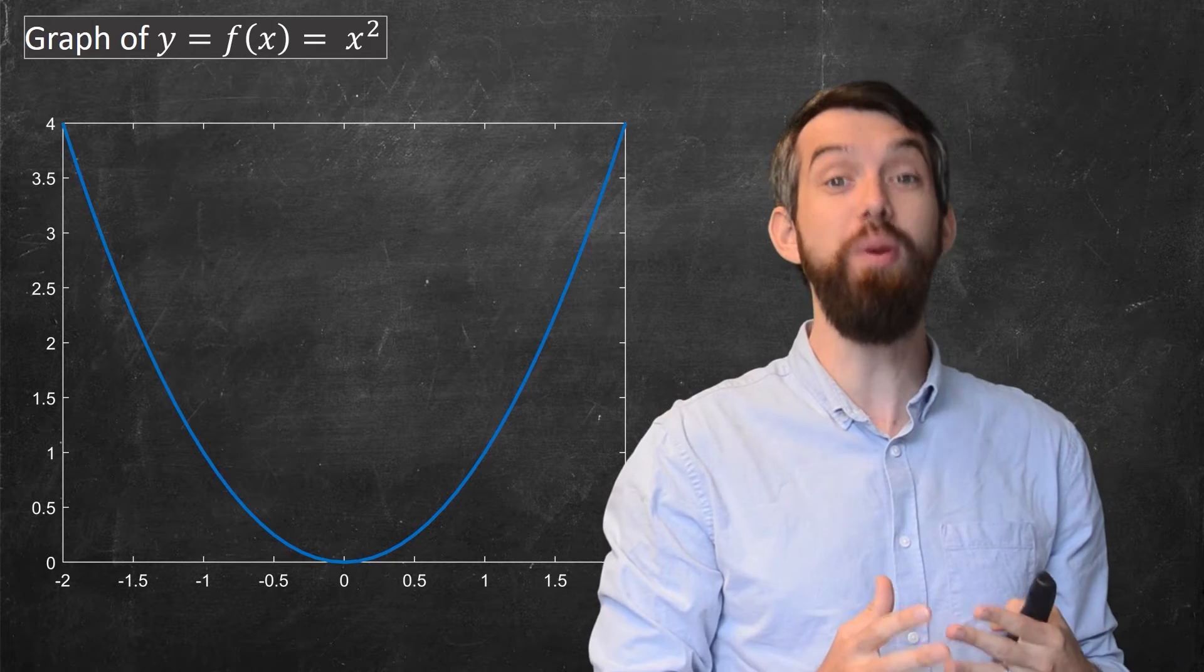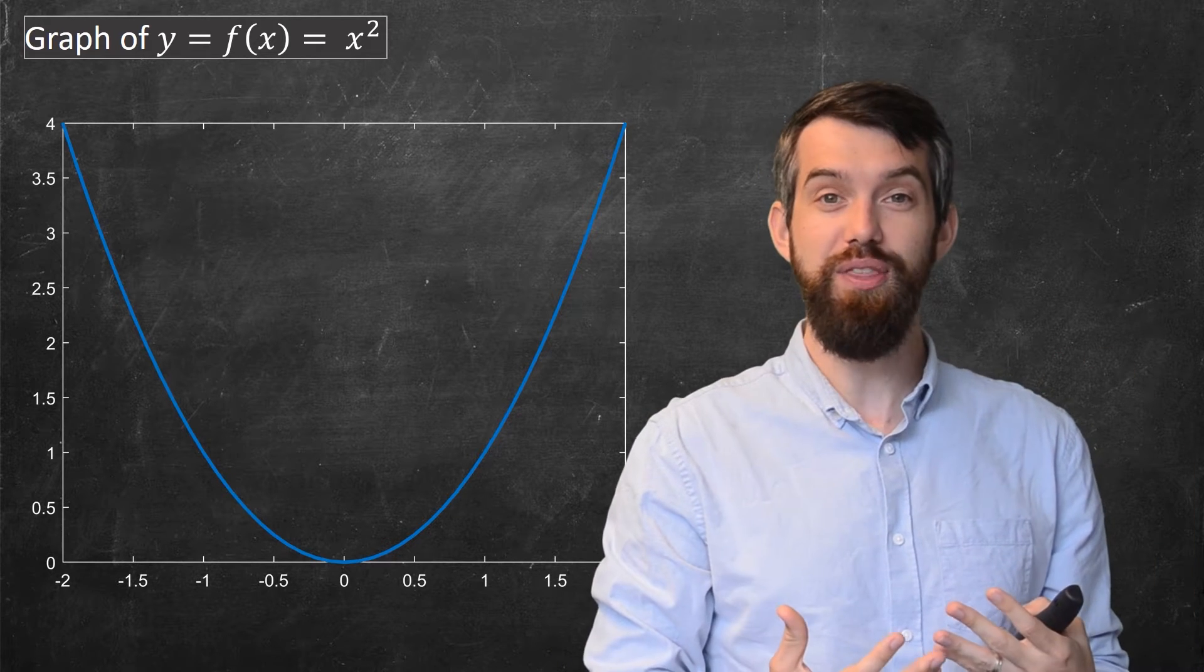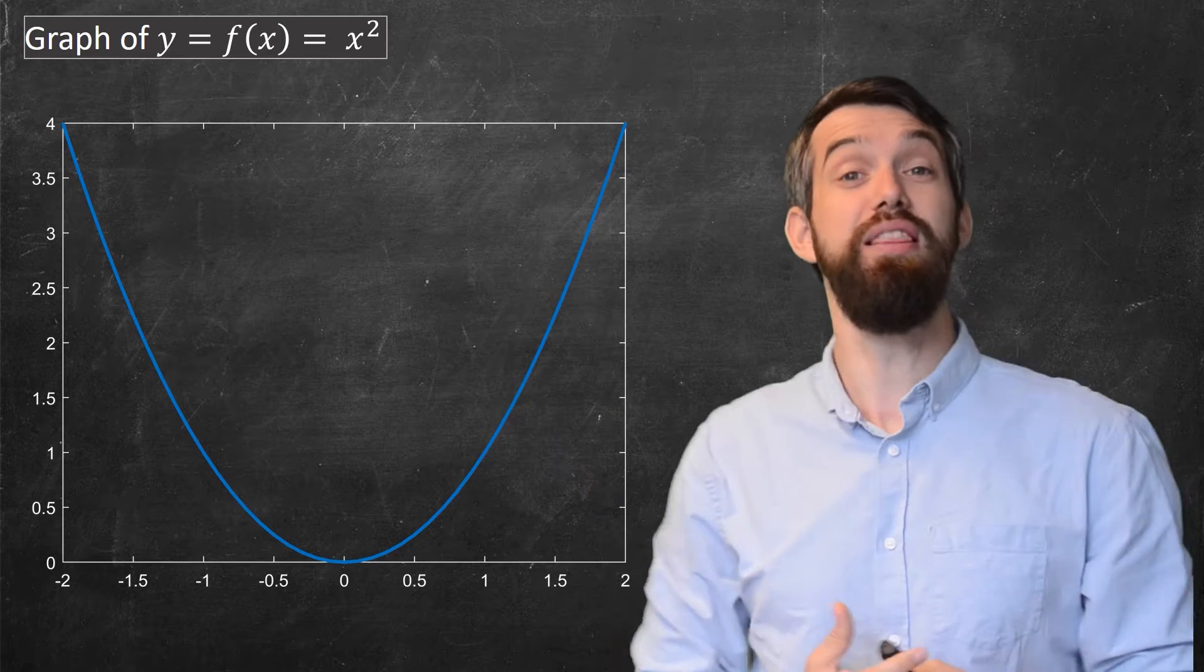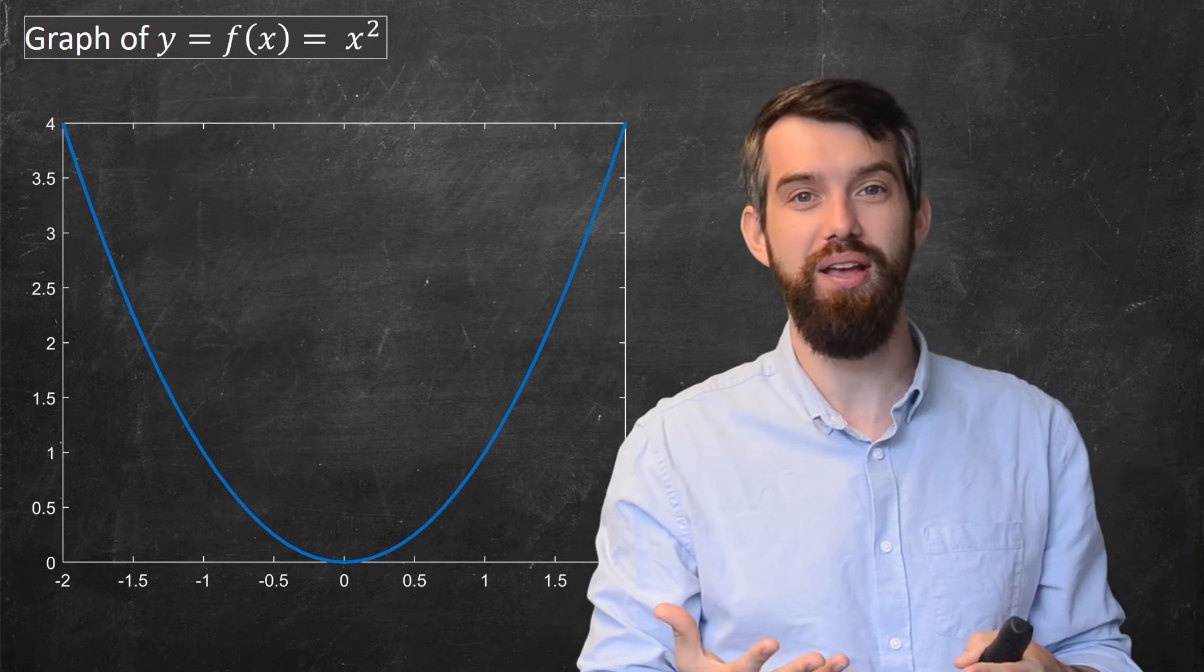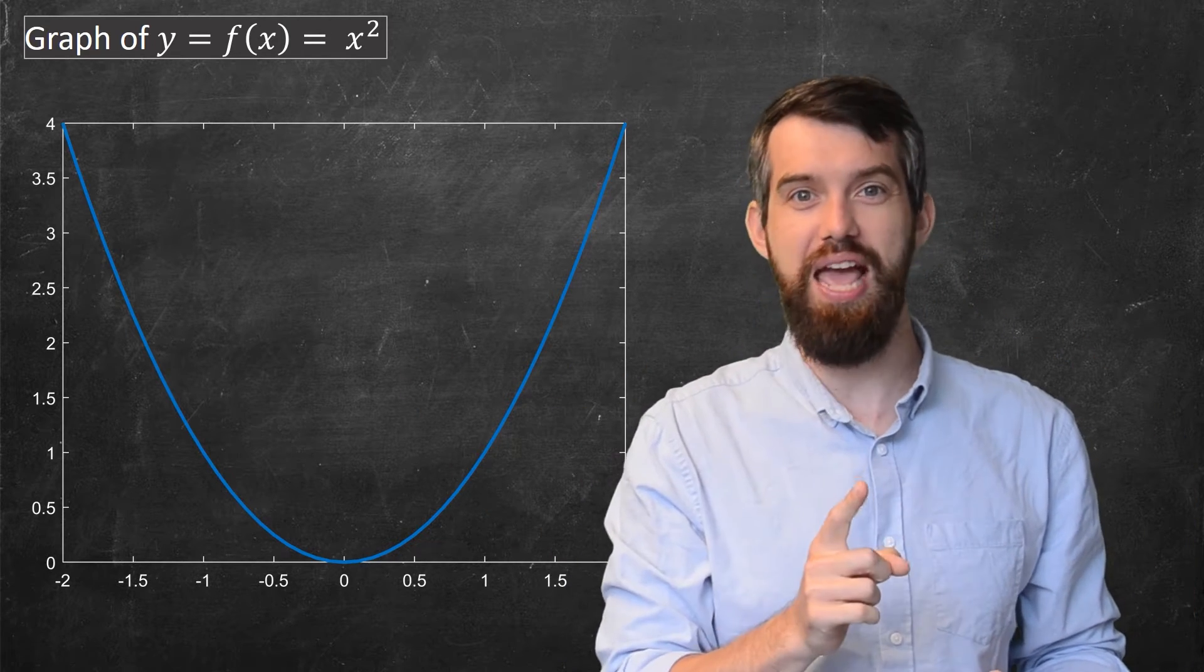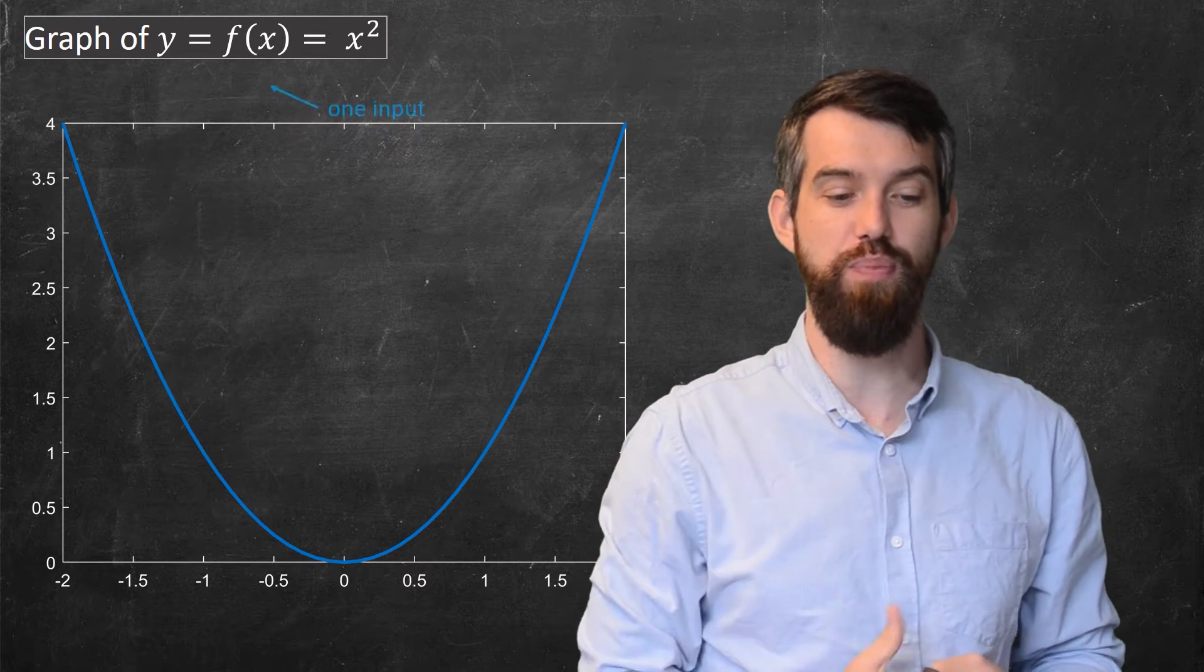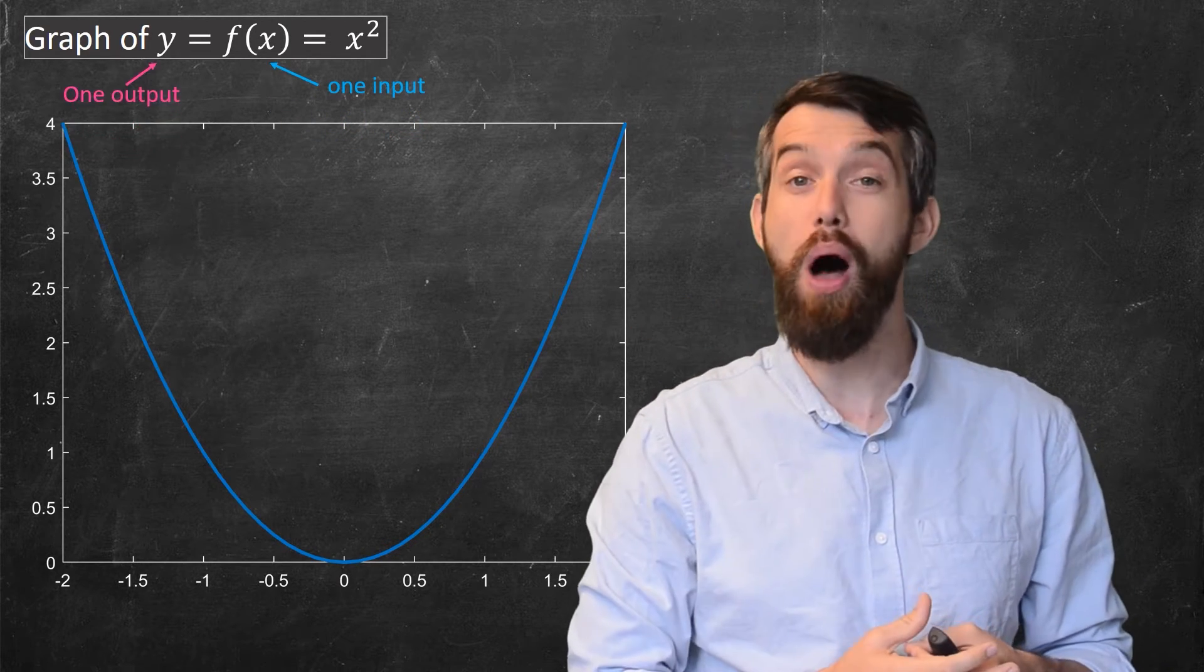But let's briefly begin by studying what we did in first-year calculus. This is when you'd have a graph that looked like this, so y equal to x squared. And what was important back in the day was that you had a single input x and you had a single output y.